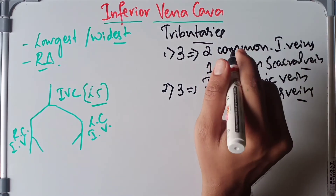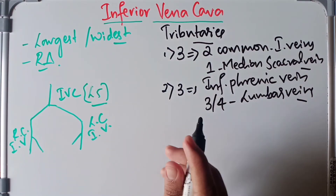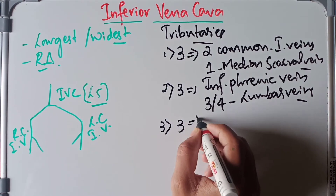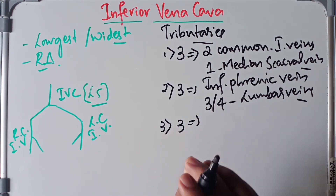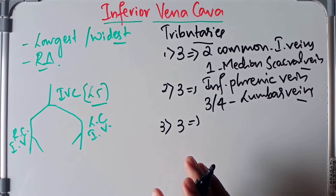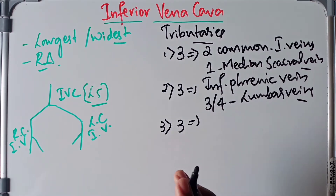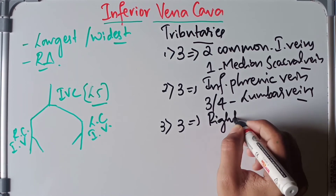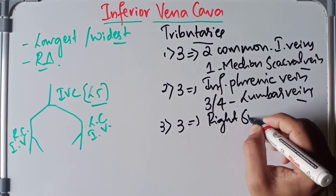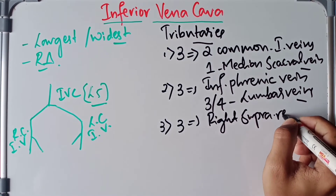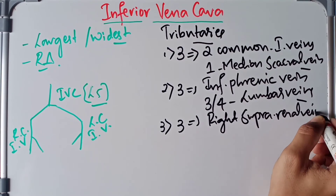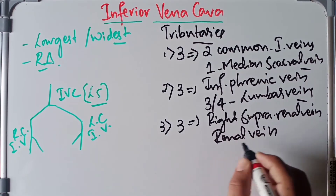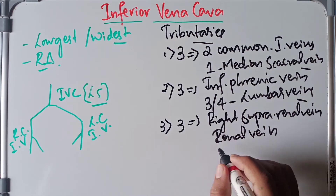We also have three lateral visceral tributaries: they are the right suprarenal vein, the renal veins, and the right testicular or ovarian vein.